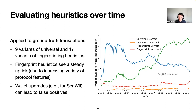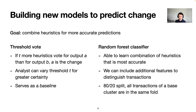What we can see is that in general the average number of correct votes per transaction is much higher than the average number of incorrect votes, meaning that on average these heuristics are successful in determining the correct change output. We also observed that fingerprint heuristics see a steady uptake over the past few years, due to the increasing variety of protocol features such as segregated witness in bitcoin. At the same time, wallet upgrades to new protocols can also lead to false positives.